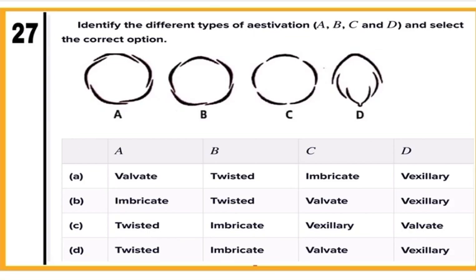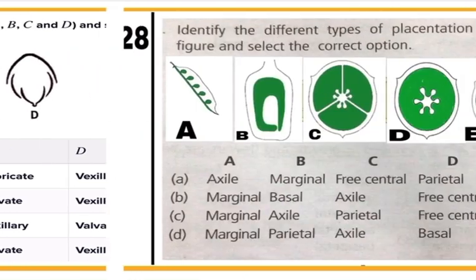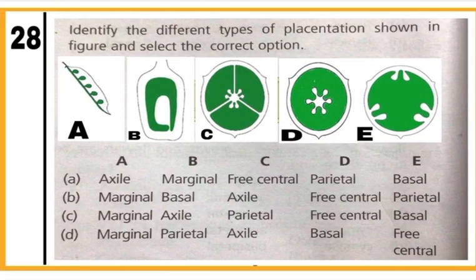Question 27: Identify the different types of aestivation A, B, C, and D and select the correct option. Aestivation is the arrangement of sepals or petals with respect to other members of the same whorl. Figure A shows twisted type, B shows imbricate type, C shows valvate type, and D shows quincuncial type of aestivation. Mark D as the correct answer.